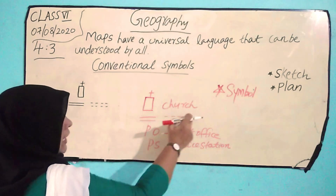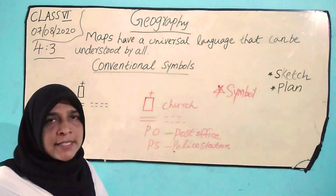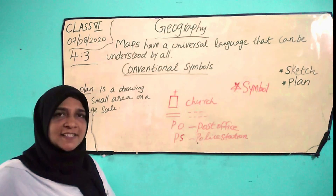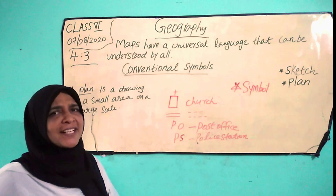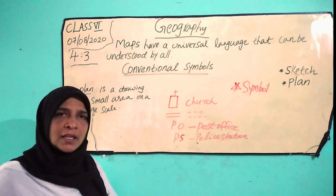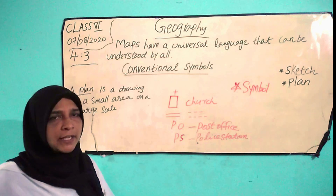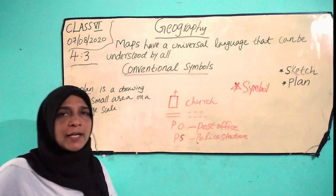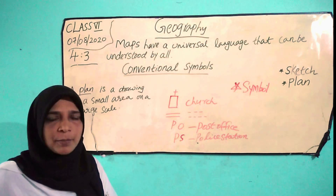These symbols indicate church, and these lines indicate metal and unmetalled roads. Various colors are used for the same purpose. Have you noticed a map? Blue color is used to indicate water bodies.